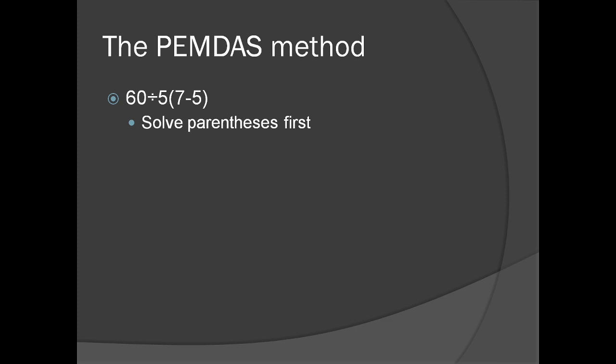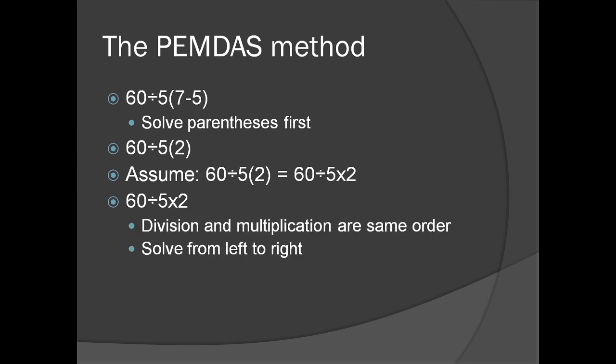But now Talwalkar assumes that 5(2) is the same as multiplication. In other words, he treats 60÷5(2) as equivalent to 60÷5×2. Because of this, he concludes we have to do the division first, and 60÷5=12. Then 12×2=24.